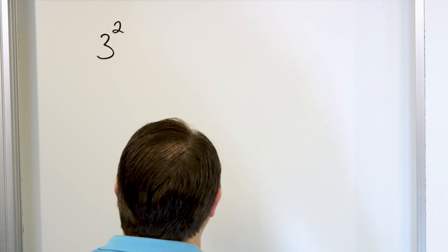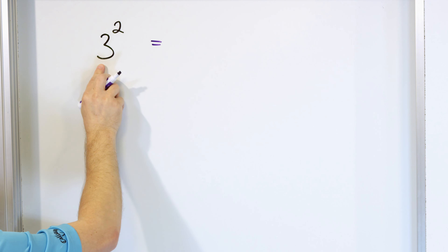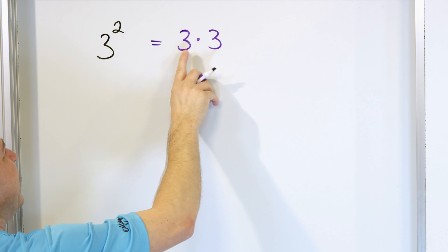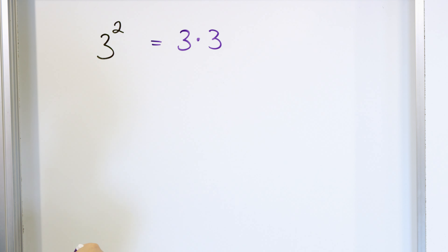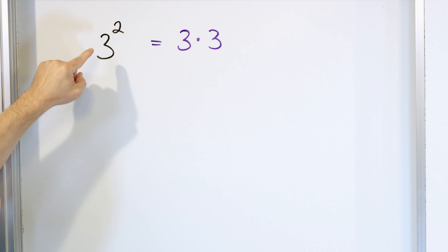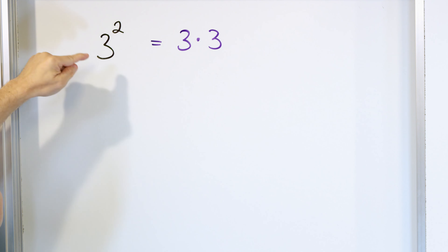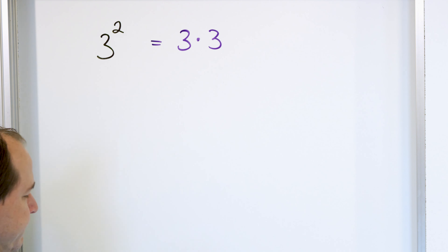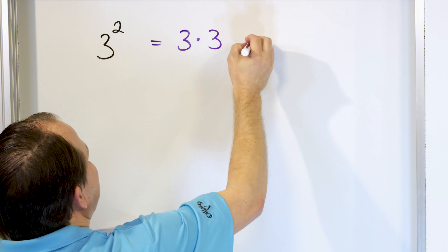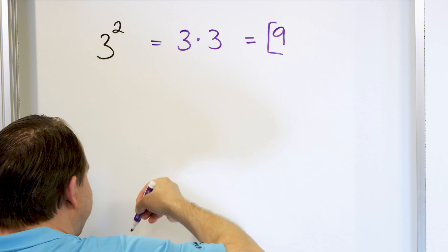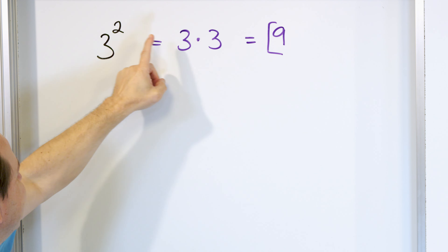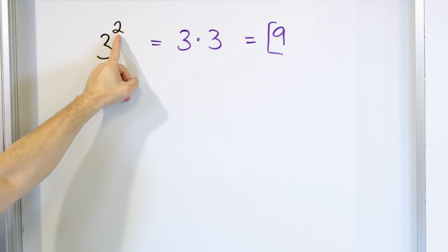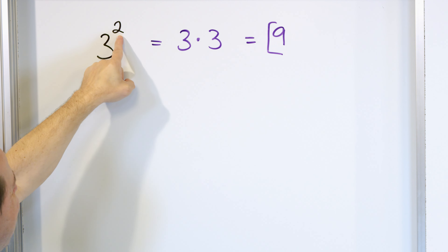Now what does this actually mean? What it means is you take the bottom number — we call it the base — and you multiply it by itself. How many 3s do I have here? I have 2 of them because it's 3 squared. So that's why I say it's a shortcut for multiplication. You take the base, the bottom number, and multiply it by itself, and how many are in the multiplication is the number in the exponent. So 3 times 3 is 9 — we say 3 squared is 9.